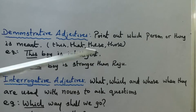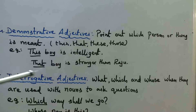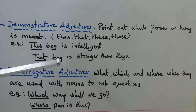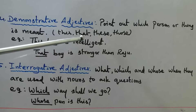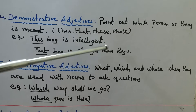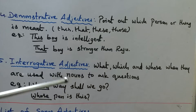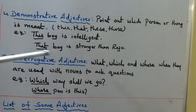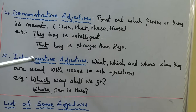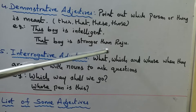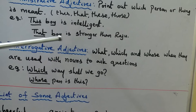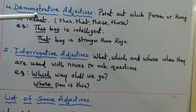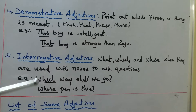Demonstrative adjectives include this, that, these, and those. For example: 'This boy is intelligent' — which boy? This boy. 'That boy is stronger than Raju.' Here 'this' and 'that' come under the category of demonstrative adjectives.